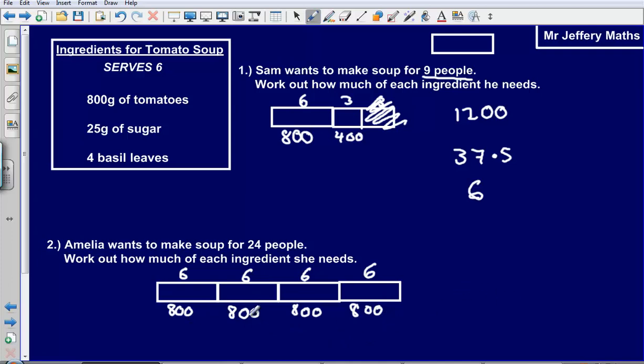So that would be 800 plus 800 plus 800 plus 800. How many tomatoes would we need? 3,200 grams. Then how much sugar would we need? Again, using the same idea, we would need 100 grams. And then how many basil leaves? We would need 16, and that would be our final answer.